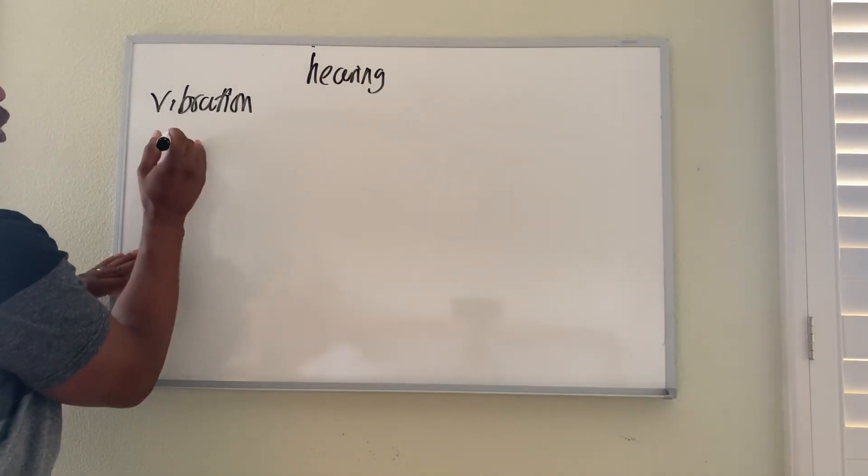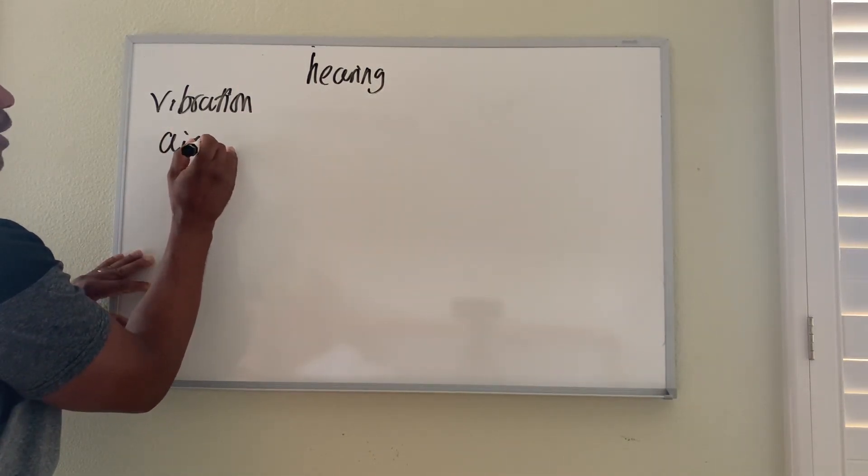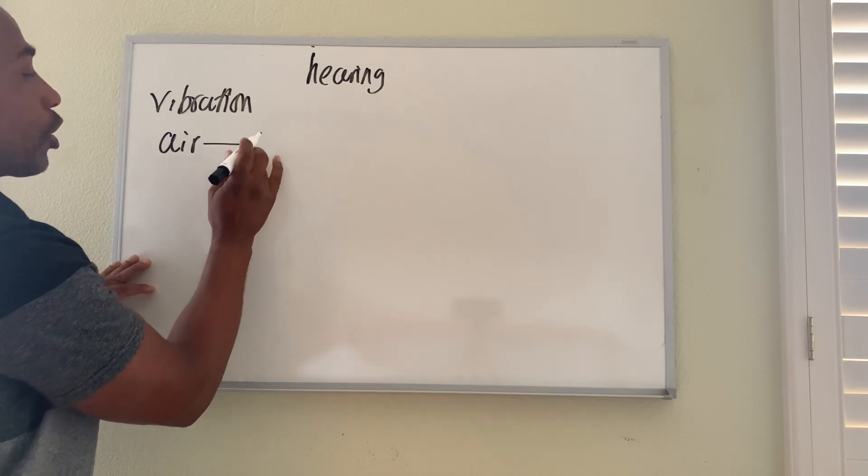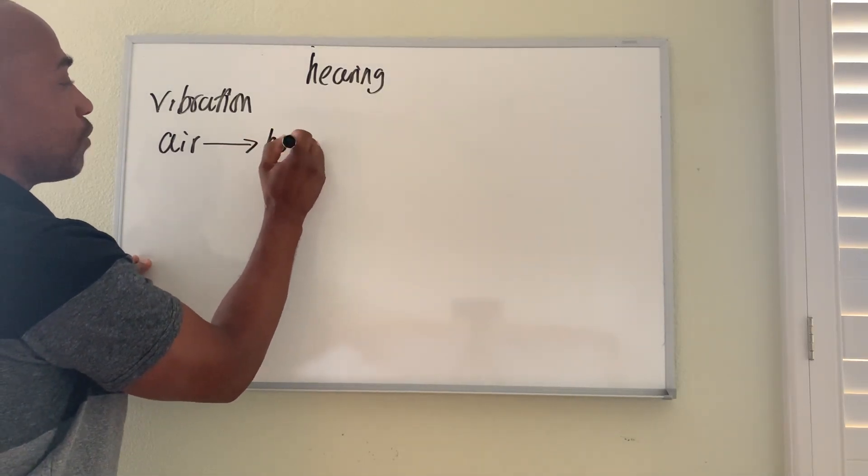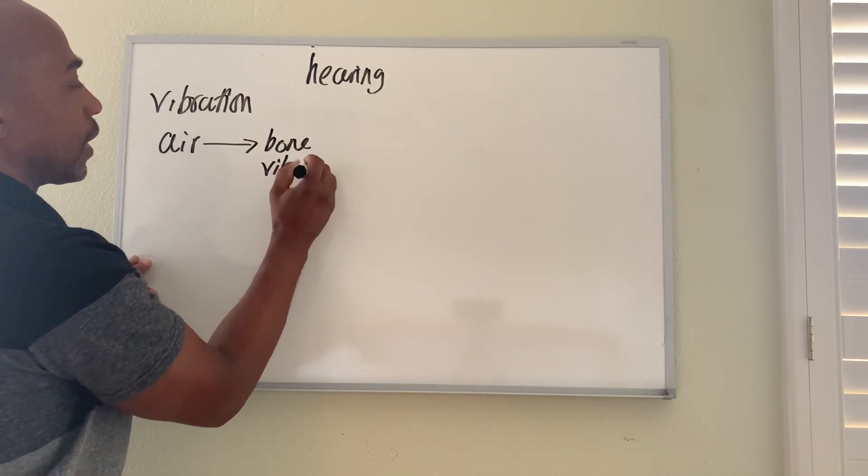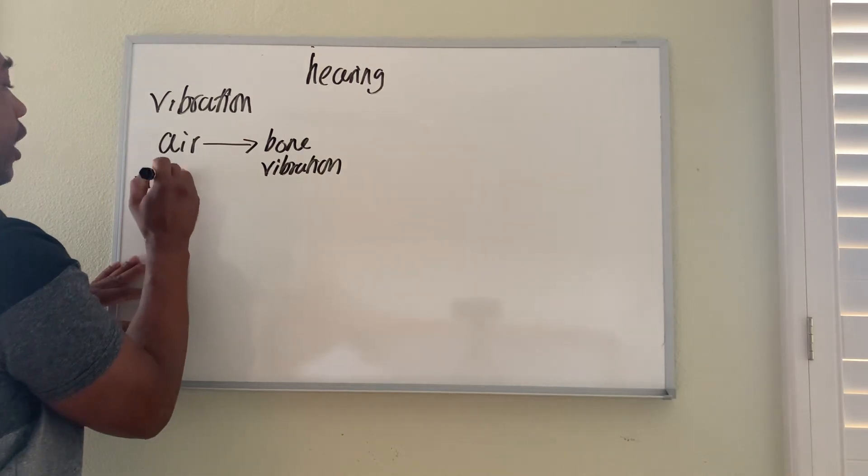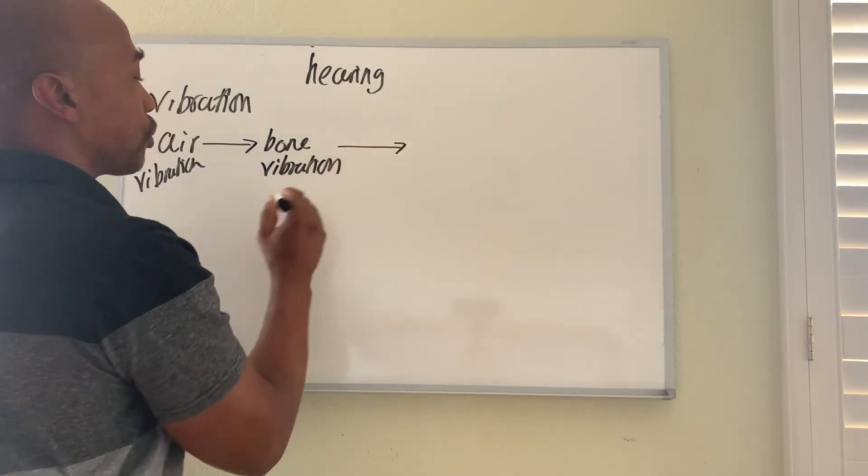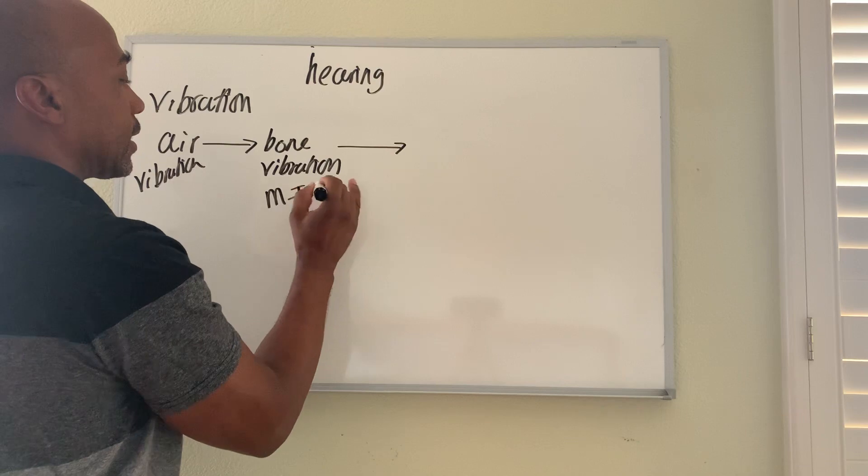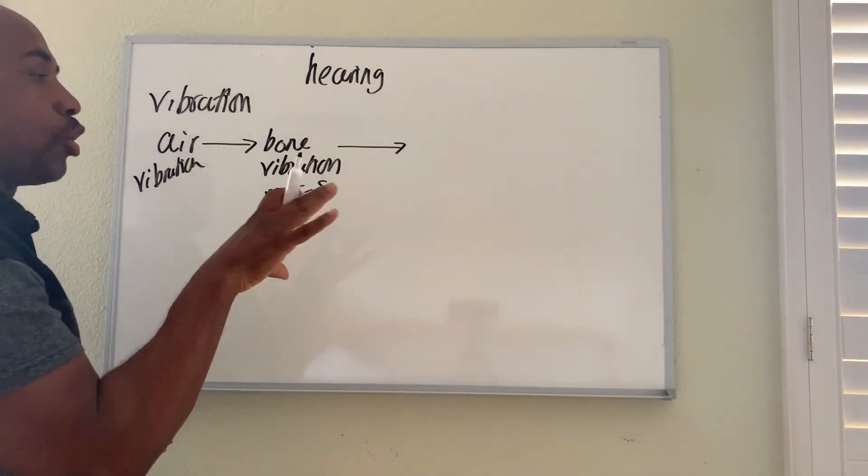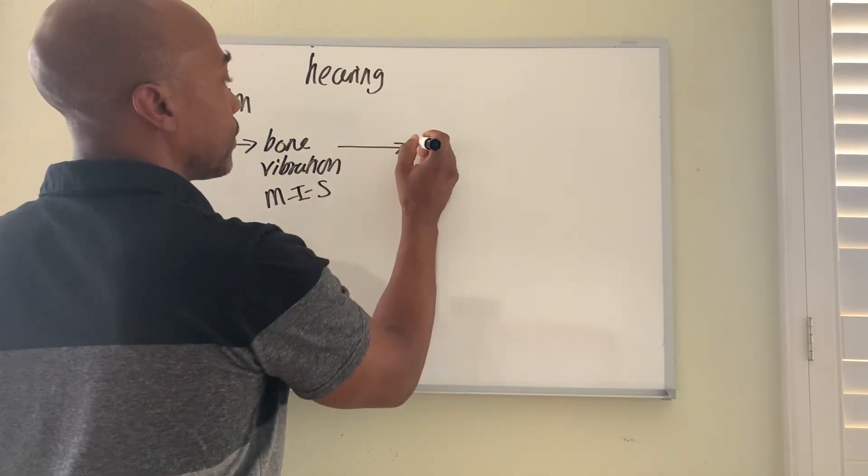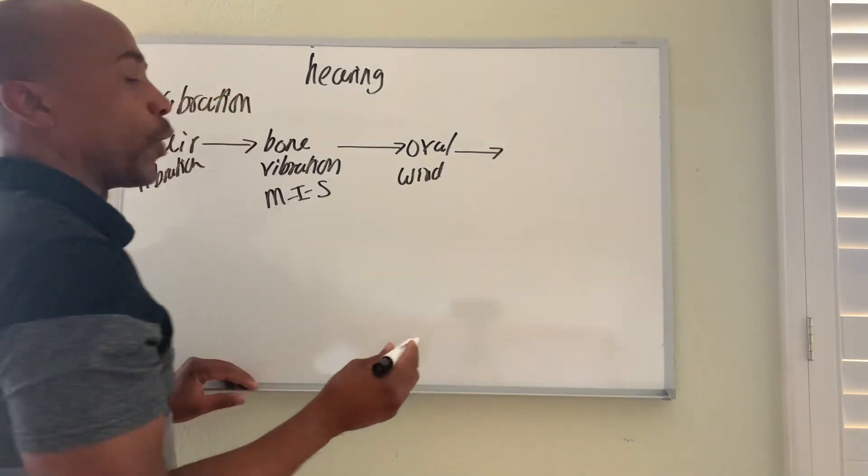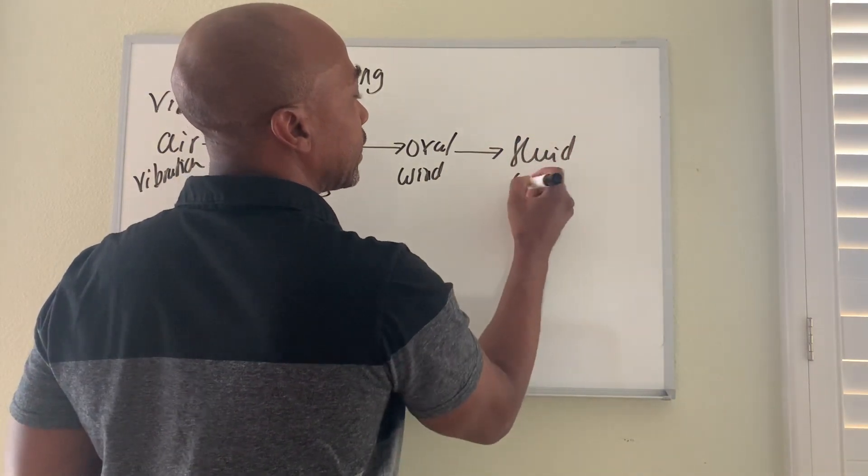Typically, the response for hearing is this. You have air molecules vibrate. Those molecules eventually travel through our ear canal to impact on our tympanic membrane, where it then vibrates bones. So you have bone vibration, which eventually then travels through your malleus, incus, stapes, to then pull or vibrate the oval window.